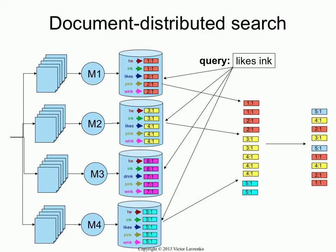An interesting twist on this problem is metasearch, where you write the head node and M1 is Google, M2 is Bing, and M4 is Baidu. You take a query, send it to all the search engines, and each one returns a set of results, and then you try to merge them in the hope of coming up with a better ranking overall. The problem is these search engines don't return scores to you — they just return positions. And even if they did return scores, you wouldn't know how those scores are computed. So merging these ranked lists is devilishly hard, and it's a whole cottage industry of methods just for that problem.